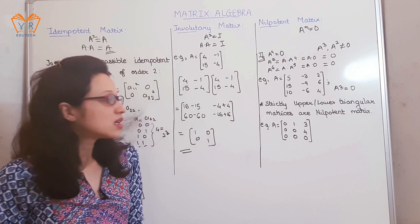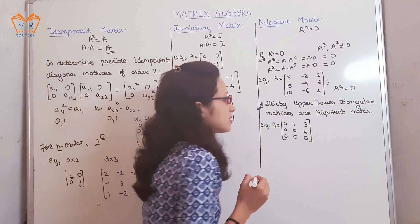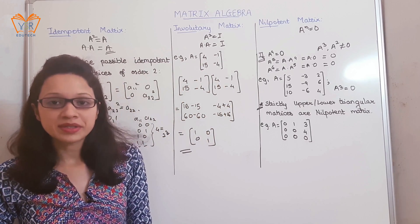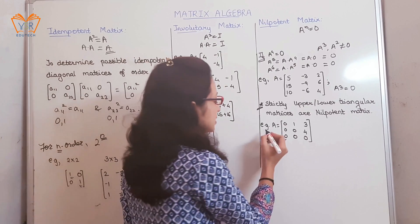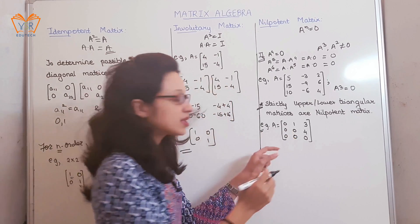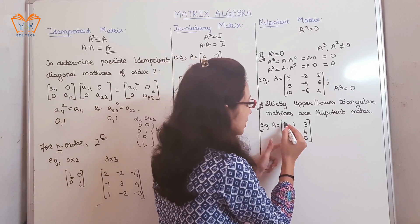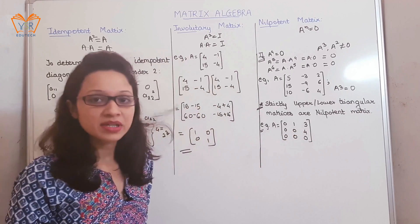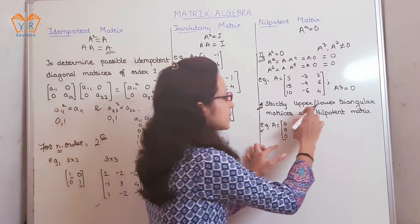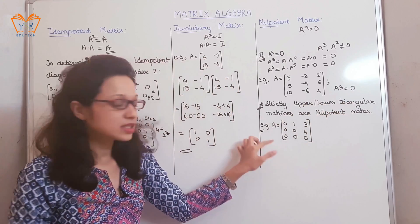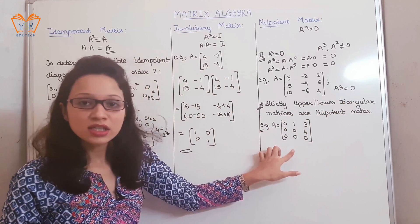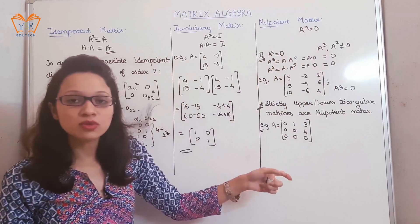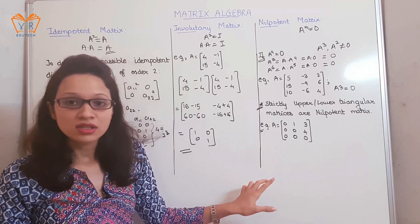It is important to note that any strictly upper or lower triangular matrix is a nilpotent matrix. Consider the example where A is a strictly upper triangular matrix — strictly because the diagonal elements are equal to 0, and upper because only the upper elements are present. We know A is a nilpotent matrix, and we need to find m, the smallest positive integer that makes A equal to the null matrix.